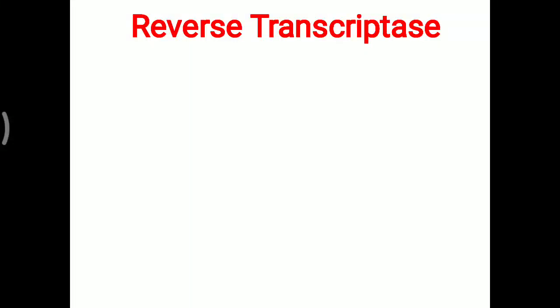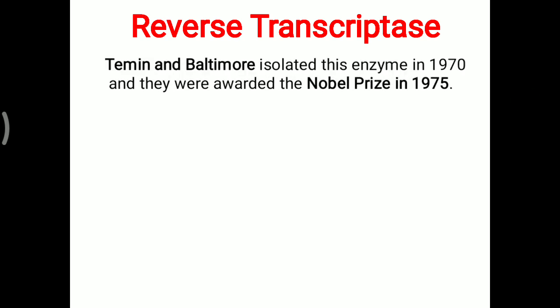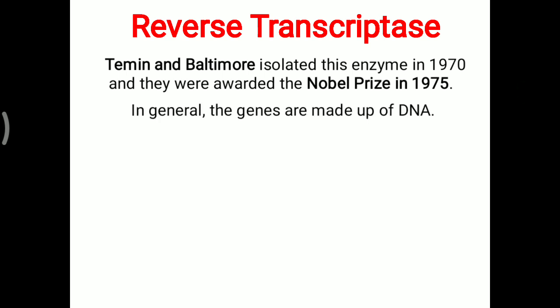Today's topic is about reverse transcriptase. The suffix '-ase' indicates it is a type of enzyme. Temin and Baltimore isolated this enzyme in 1970 and were awarded the Nobel Prize in 1975.